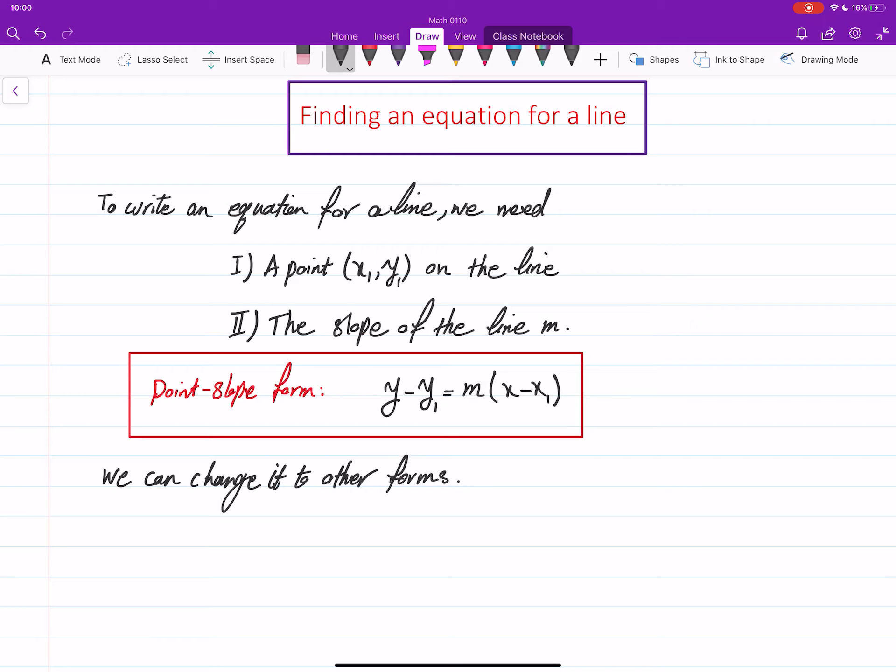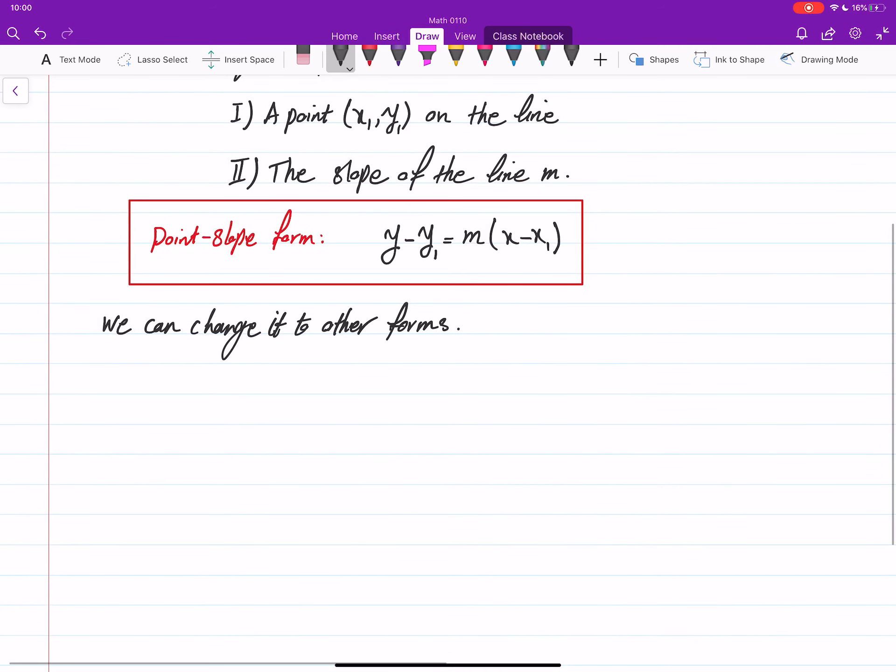In particular, what I am interested in this course, you have to be able to write it in slope-intercept form. What is the slope-intercept form? You can rearrange this equation such that y is on one side, and everything else is on the other side. There is a number, which is going to be slope times x plus a number.